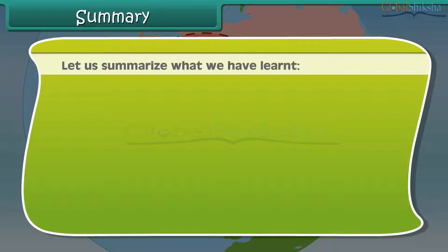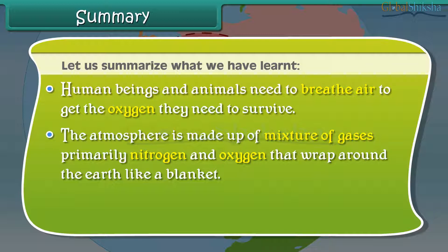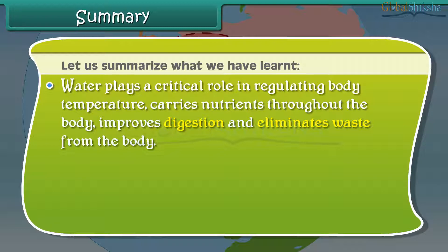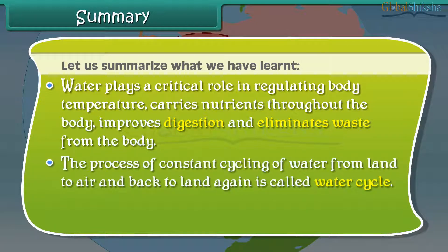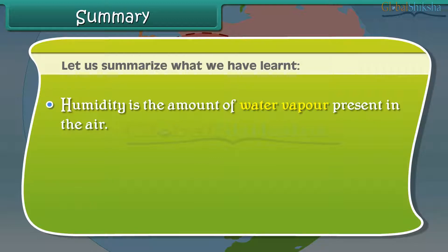Let us summarize what we have learned. Human beings and animals need to breathe air to get the oxygen they need to survive. The atmosphere is made up of a mixture of gases, primarily nitrogen and oxygen, that wrap around the earth like a blanket. We should save every drop of water. Water plays a critical role in regulating body temperature, carries nutrients throughout the body, improves digestion, and eliminates waste from the body. The process of constant cycling of water from land to air and back to land again is called the water cycle. Weather is a condition of an atmosphere at a certain place and time. Humidity is the amount of water vapor present in the air. A region's long-term weather patterns determine the climate.